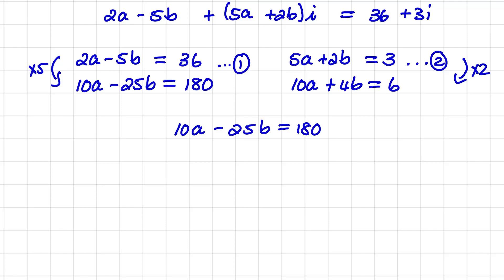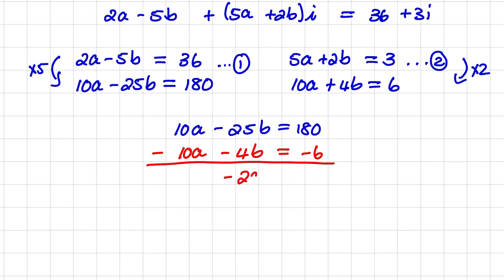Subtracting the second equation — 10a + 4b = 6, or equivalently 10a − 4b = −6 after sign adjustment — to eliminate 10a gives −29b = 174. Dividing both sides by −29, I find b = −6.